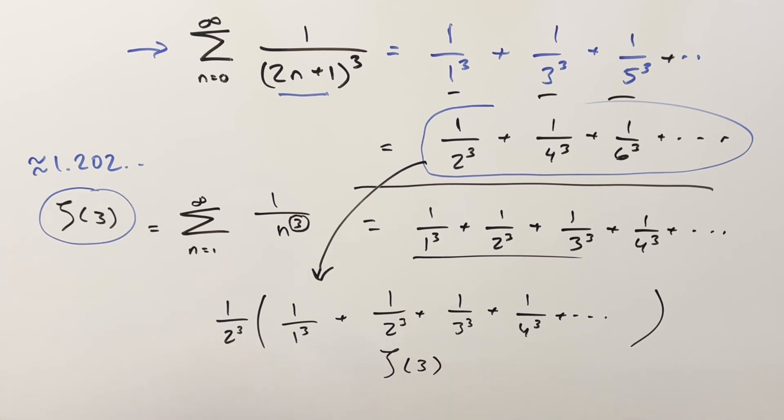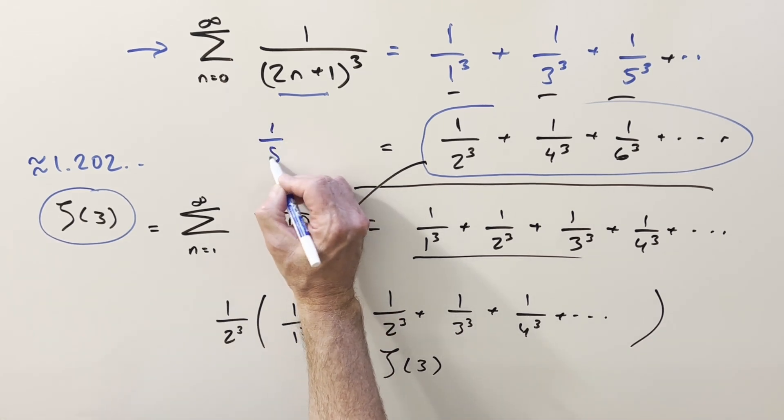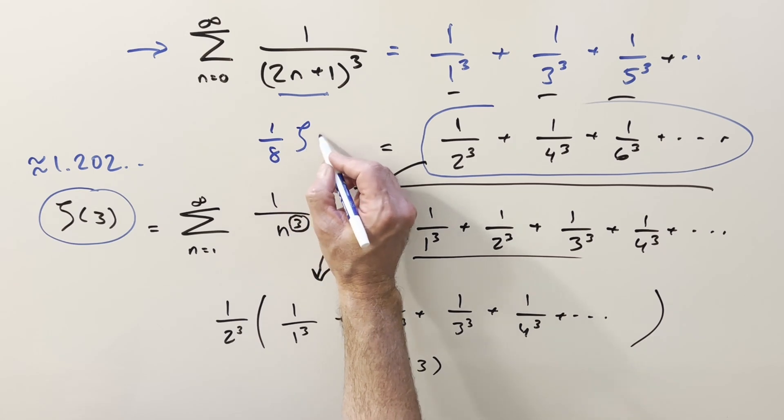Now 1/2³ is just 1/8. So the even terms equal (1/8)ζ(3).